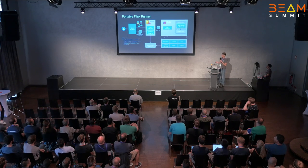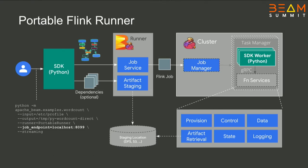What's different is this SDK worker: a Python process that can execute the Python user code supplied with the pipeline. This SDK worker communicates with the Java side of the Flink runner via FN services. The FN services contain various planes. The worker communicates with FN services over gRPC, and this is how the execution is driven. In a streaming job, records come in one by one, are forwarded from the Beam runner to the Python worker, the Python worker returns results, and there are many details to make this work for the entire Beam model.